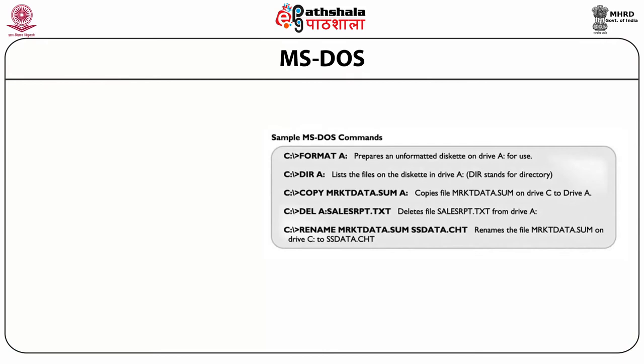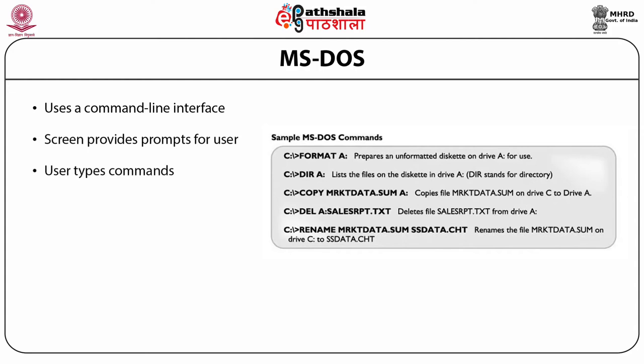Having discussed the functions and features of the operating system, let us concentrate on popular desktop operating systems like Microsoft DOS, Windows, and Linux. Microsoft DOS was one of the revolutionary points of introducing computers to the desktop level. The problem with Microsoft DOS was that it uses a command line interface — the screen prompts the user to type commands, and you need to remember the commands, which is not very user-friendly. Some examples of DOS commands are given in the slide.